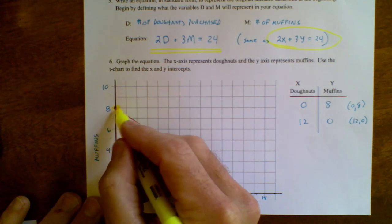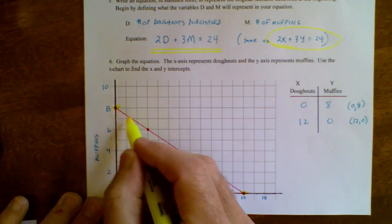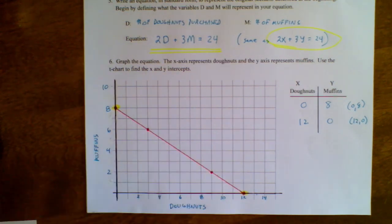So I take these two points, and I plot them on my graph, and I connect the two points, and I have now graphed the equation.